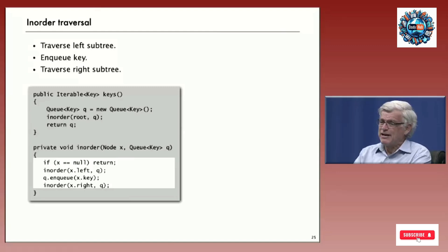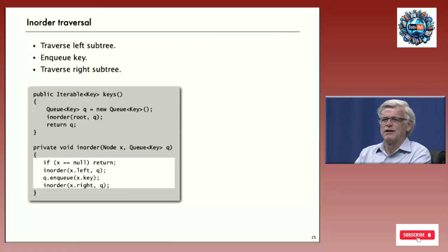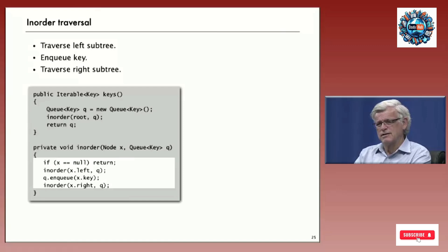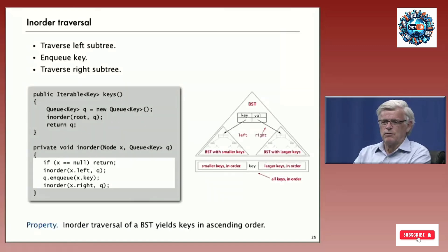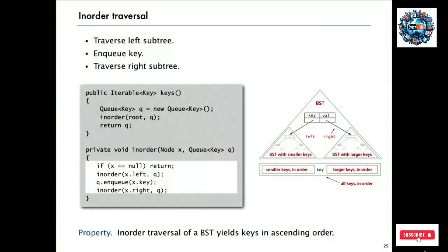First it puts all the ones to the left on the queue in their natural order, then the next thing that appears is the key at the root, and then the ones on the right go in their natural order — and by induction they're all in natural order. That's a very simple implementation of an iterator for the symbol table with comparable keys. The diagram on the right gives another simple way to look at it pictorially: all the keys smaller on the left are put out, then the key at the root, then all the keys on the right in order — and by induction that key will have all those keys in order.